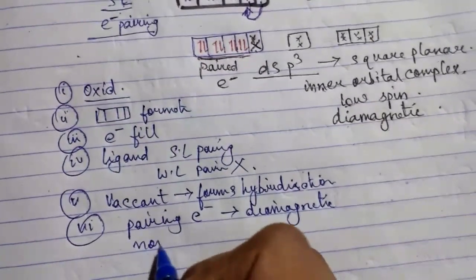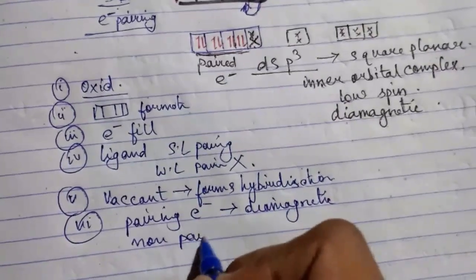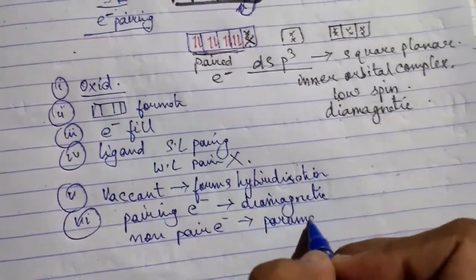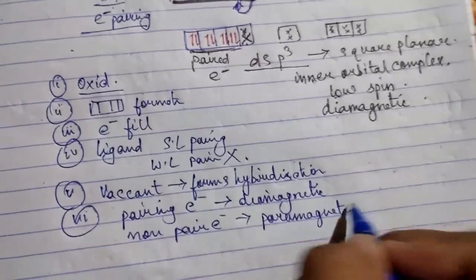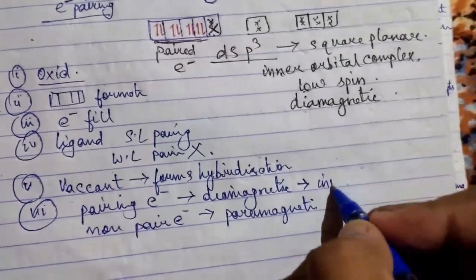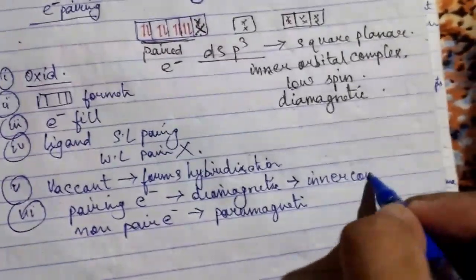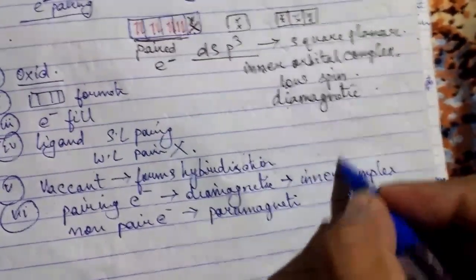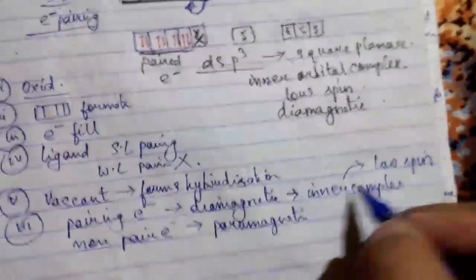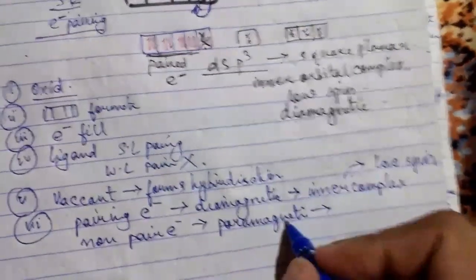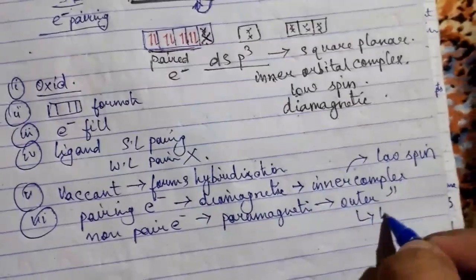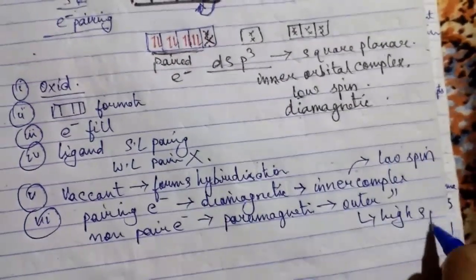Non-paired electrons mean paramagnetic. Diamagnetic means the d orbital is vacant — that is, an inner complex. Inner complex means low spin. Paramagnetic is an outer complex, and outer complex means high spin. Remember this.